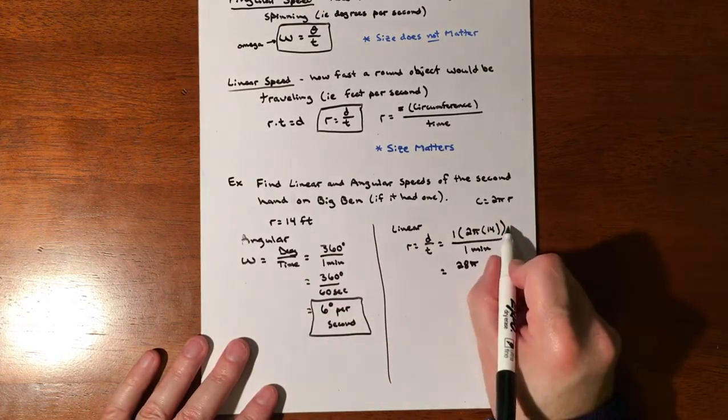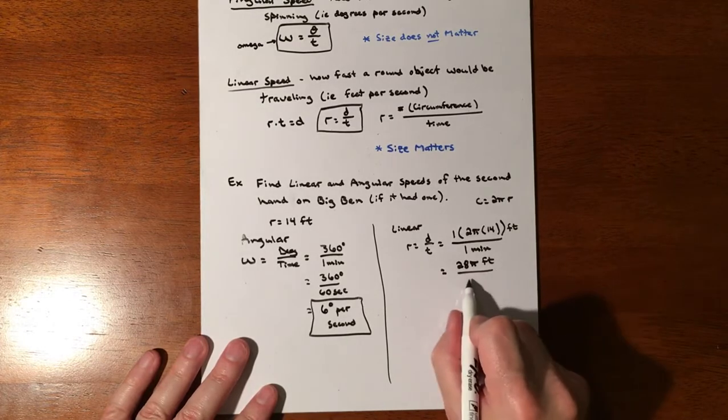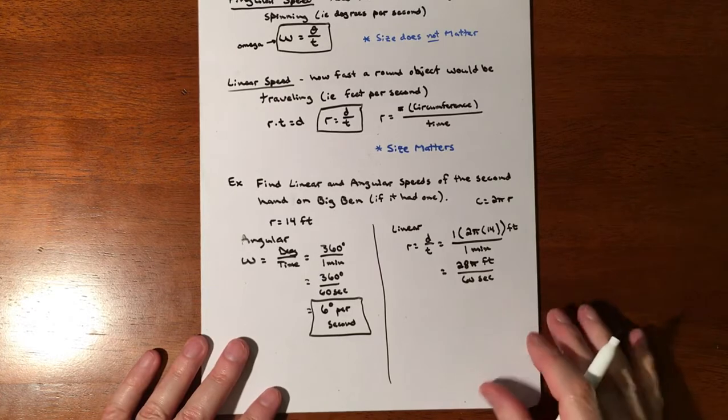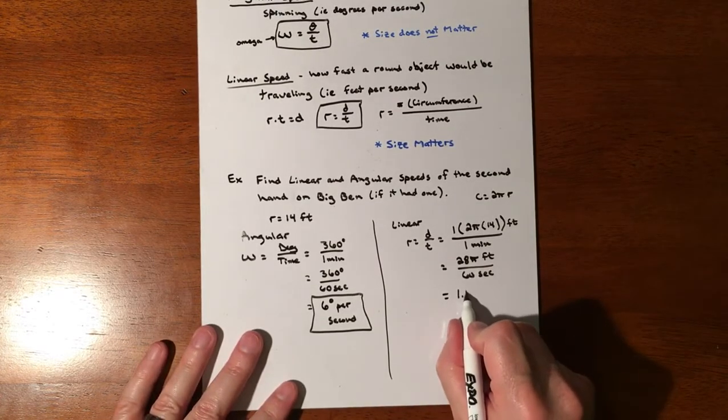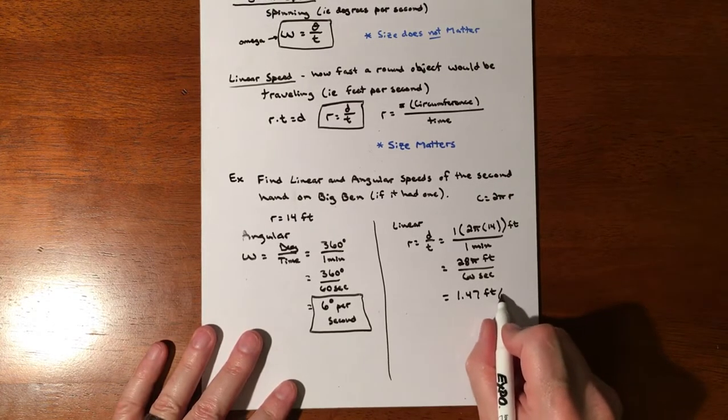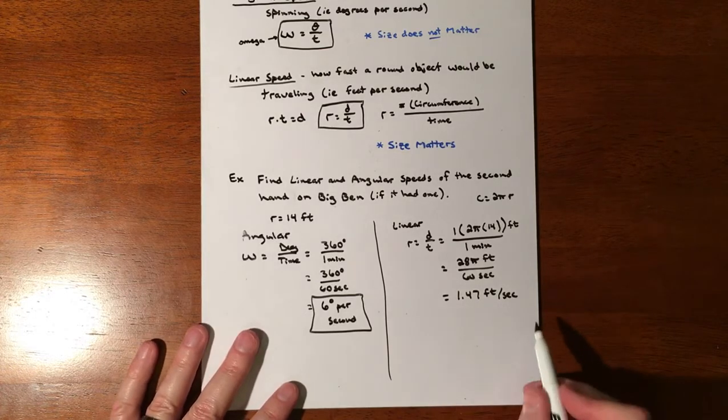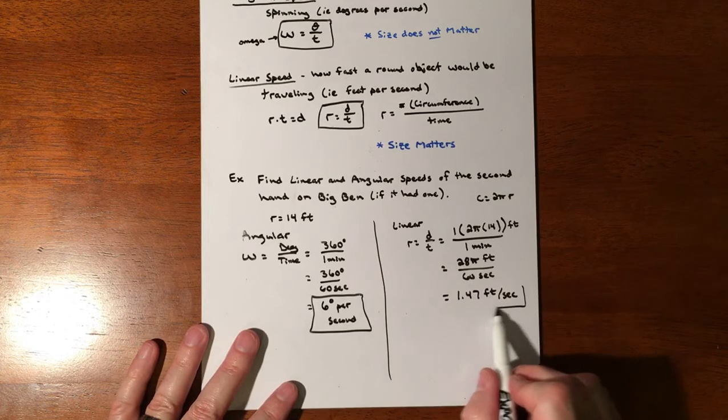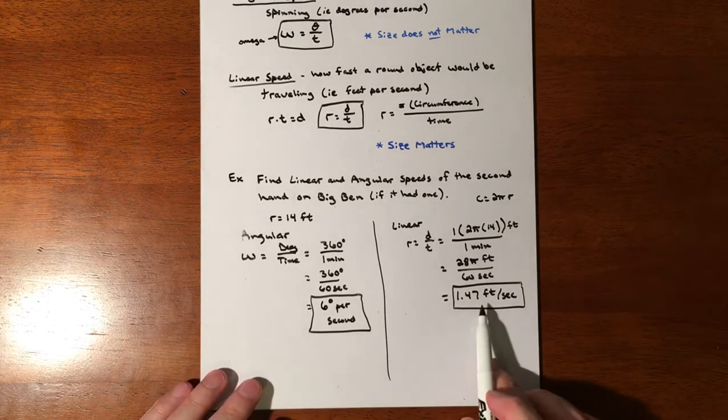If you divide that out, it ends up being about 1.47 feet per second, so about a foot and a half every second if a second hand was going around on Big Ben. But if it was any other clock, smaller or bigger, it's going to definitely be a different amount of distance traveled in each second.